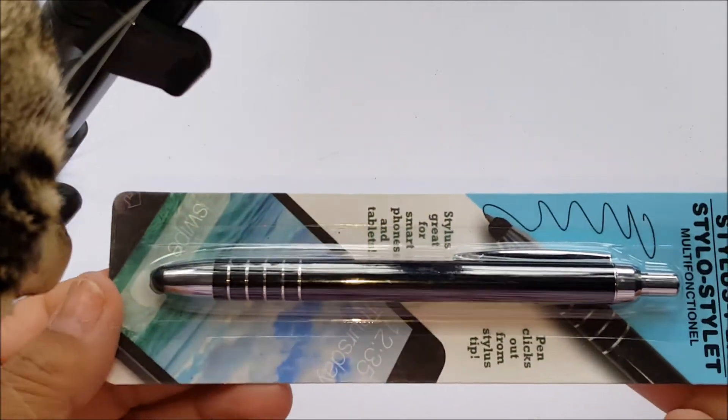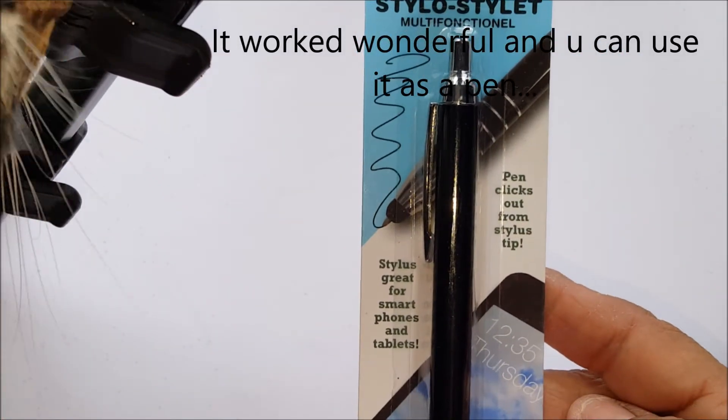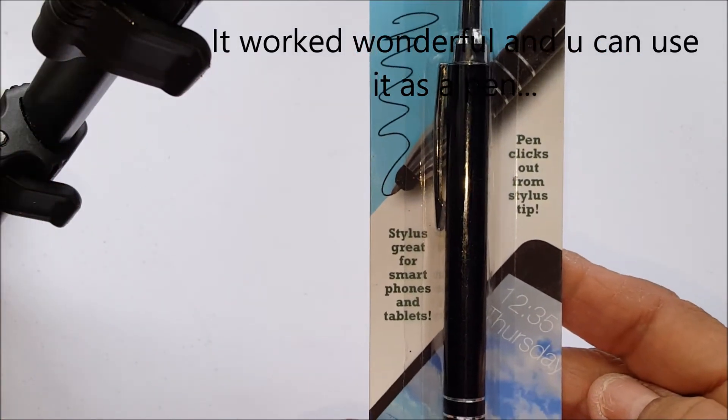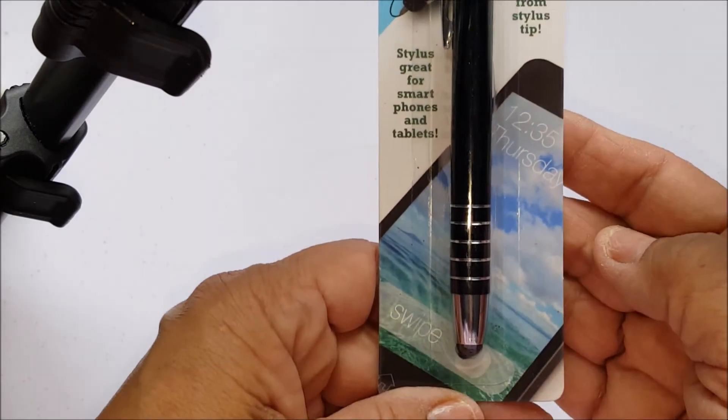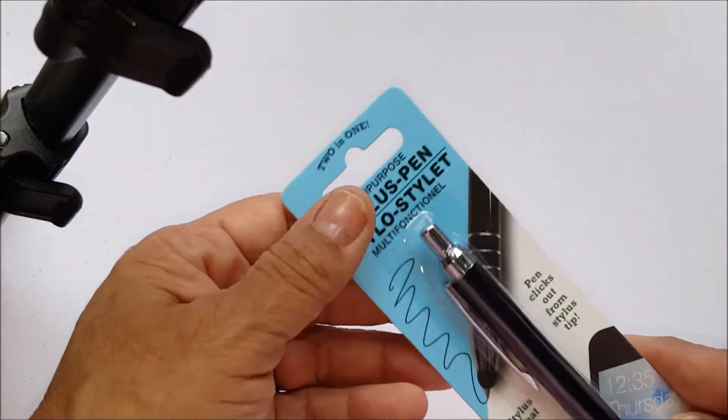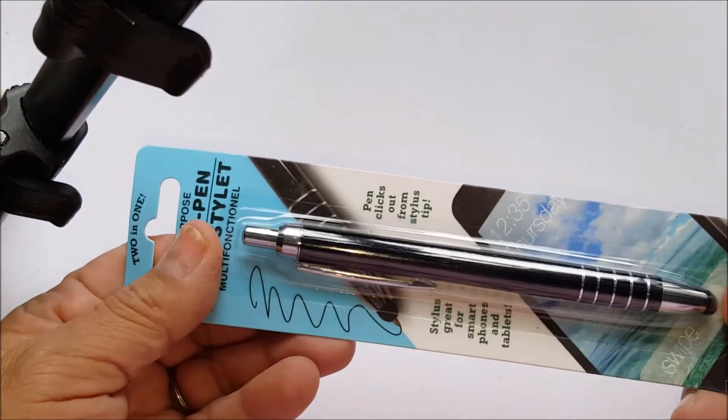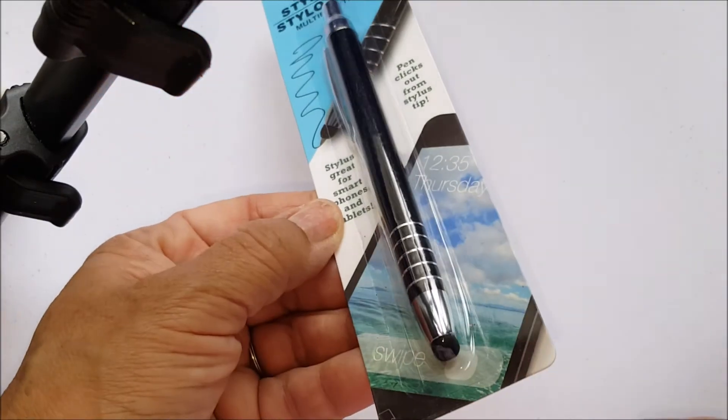I'm going to try this on my phone. It's a stylus pen. Pen clicks out from stylus tip. Stylus great for smartphones and tablets. I already have a little one on my phone that Myra gave me, but I wanted to try this bigger one. Oh no, one more thing.